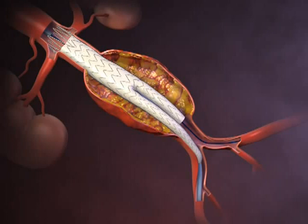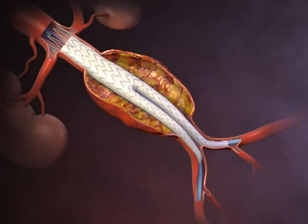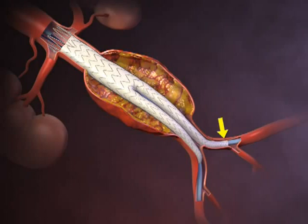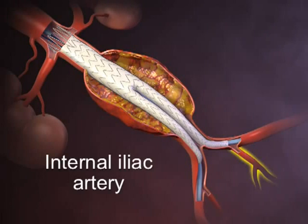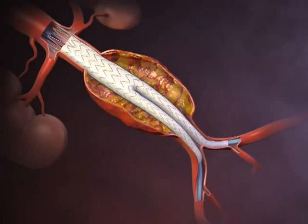The contralateral limb component of the stent graft is then introduced and deployed with overlap sufficient to prevent leakage around the junction of the main body of the device and the proximal end of the limb, and so that the distal end of the contralateral limb is located superiorly to the internal iliac artery. The ipsilateral limb of the stent graft is deployed in similar fashion.